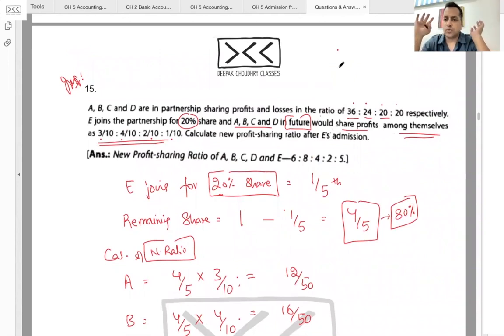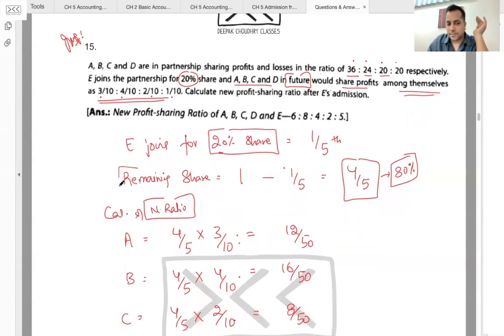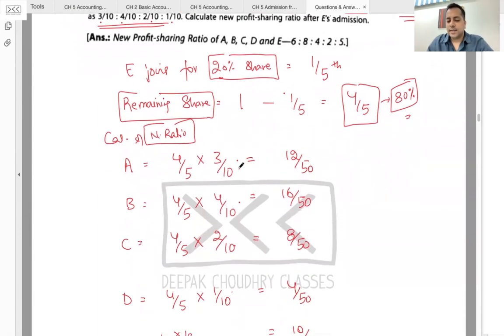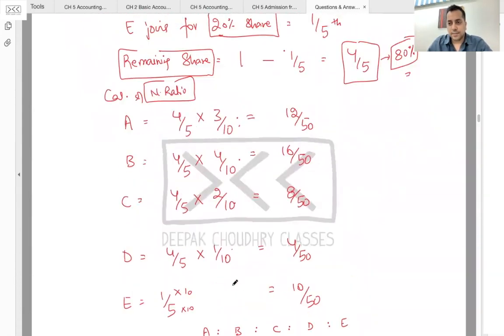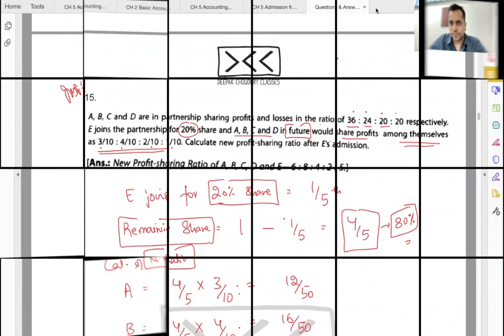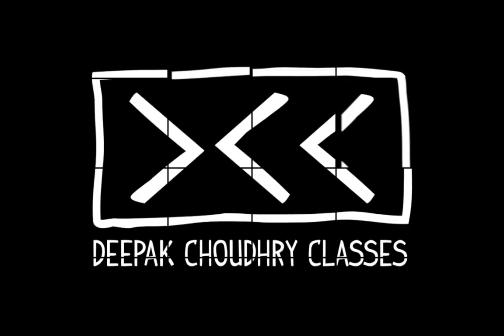Aapas mein aapas mein kis ratio mein baat rahe the? 36:24:20:20. Ab unhone baad E ko bhi firm mein le lete hain. E ko de do 20%. Aapas mein aapas mein kis ratio mein baatenge? Aapas mein.